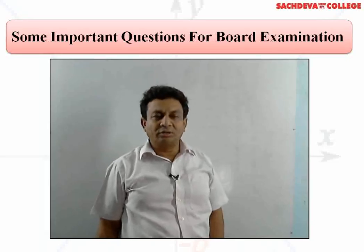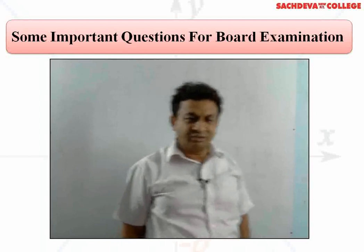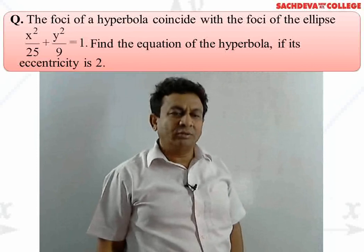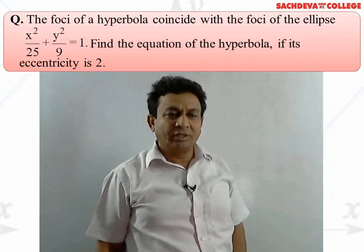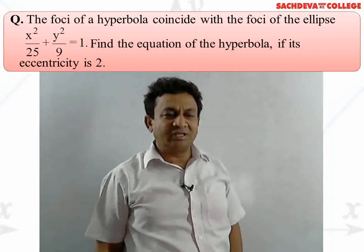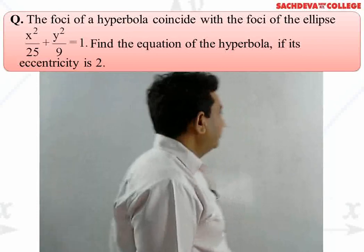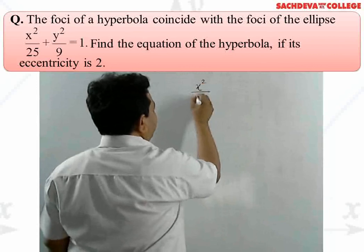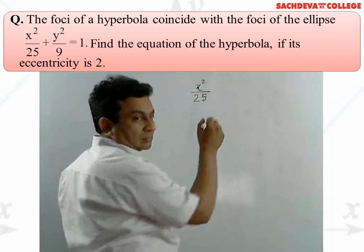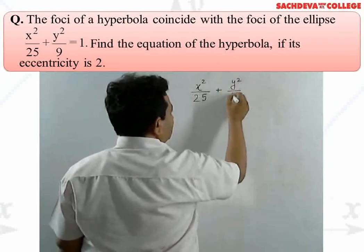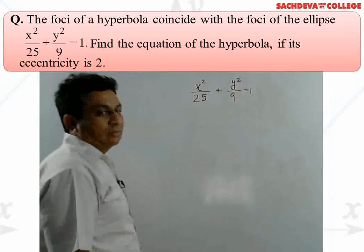Now we discuss some important courses for board preparation. Question 1: the foci of a hyperbola coincides with the foci of the ellipse x²/25 + y²/9 = 1. Find the equation of the hyperbola if its eccentricity is 2. Given that the equation of the ellipse is x²/25 + y²/9 = 1.